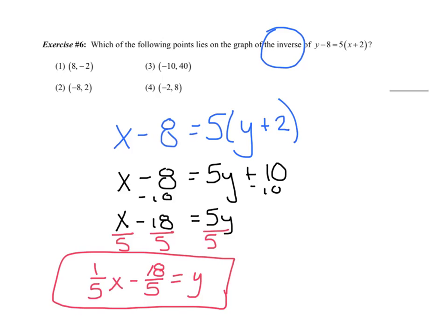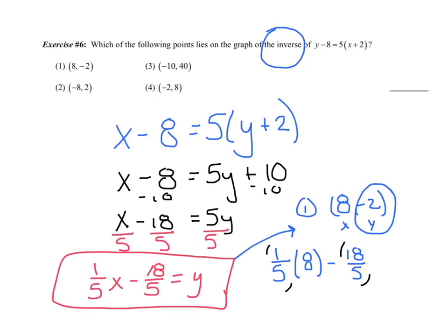Hopefully your inverse matches with mine. Once you have that, I'm just going to take my points and plug them in. Let me take example 1, the point 8 negative 2. I'll substitute this in for x and this for y and see if they come out. I'll use my calculator: 1 fifth times 8 minus 18 over 5. Do I get negative 2? Be careful that your fractions are in parentheses or use the fraction tool. In fact, I do get negative 2, which tells me I've found my correct answer. I found the inverse and then plugged the points in.